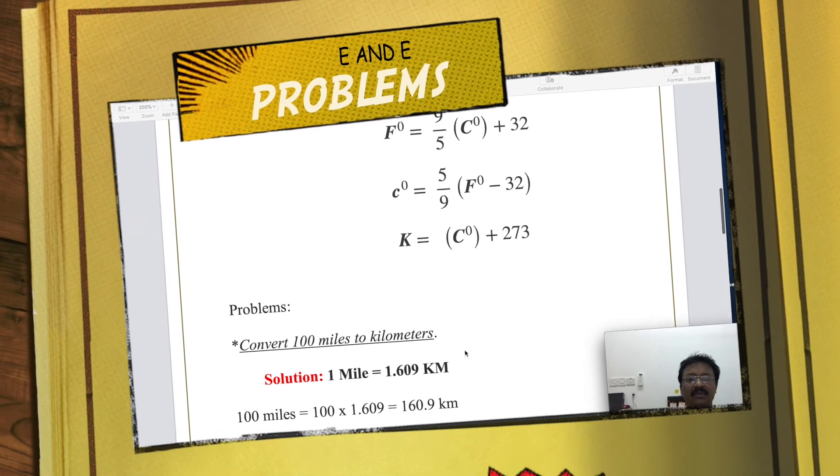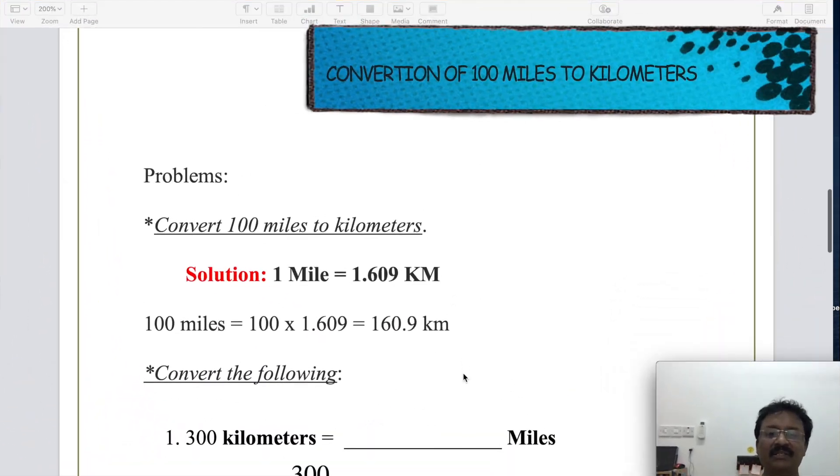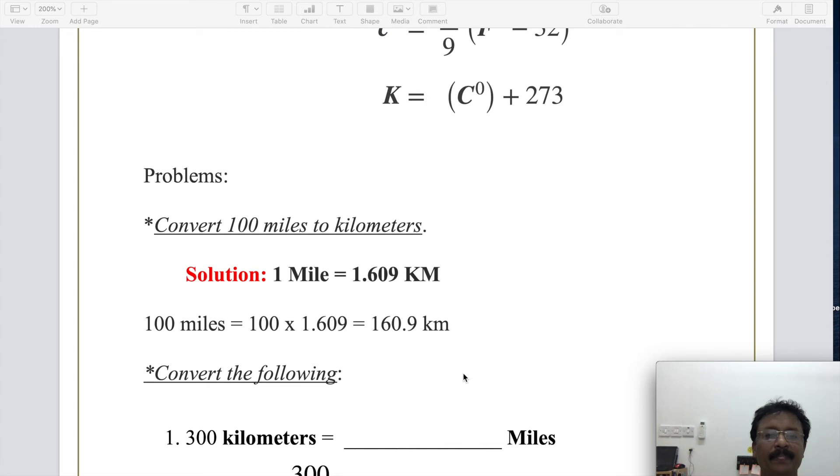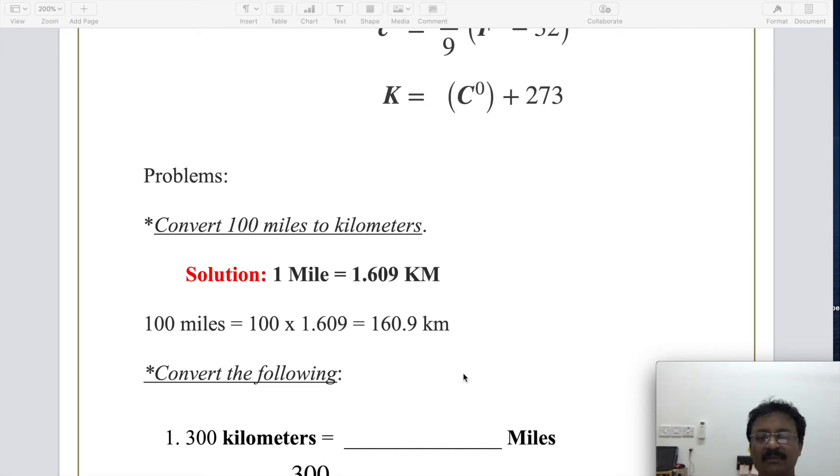The first example: convert 100 miles into kilometers. Solution: we know 1 mile equals 1.609 kilometers. 100 miles is 100 times 1.609, it becomes 160.9 kilometers. A simple multiplication. A three decimal number multiplied by 100, just shift the decimal point, it becomes 160.9 kilometers. So 100 miles is 160.9 kilometers.